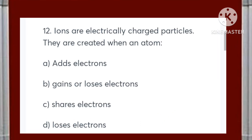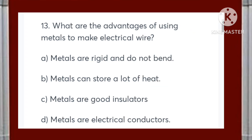Ions are electrically charged particles. They are created when an atom: adds an electron, gains or loses an electron, shares an electron, or loses electrons? Answer is B. What are the advantages of using metals to make electrical wire? Options are: metals are rigid and do not bend, metals can store a lot of heat, metals are good insulators, or metals are electrical conductors. Correct answer is D — metals are electrical conductors.